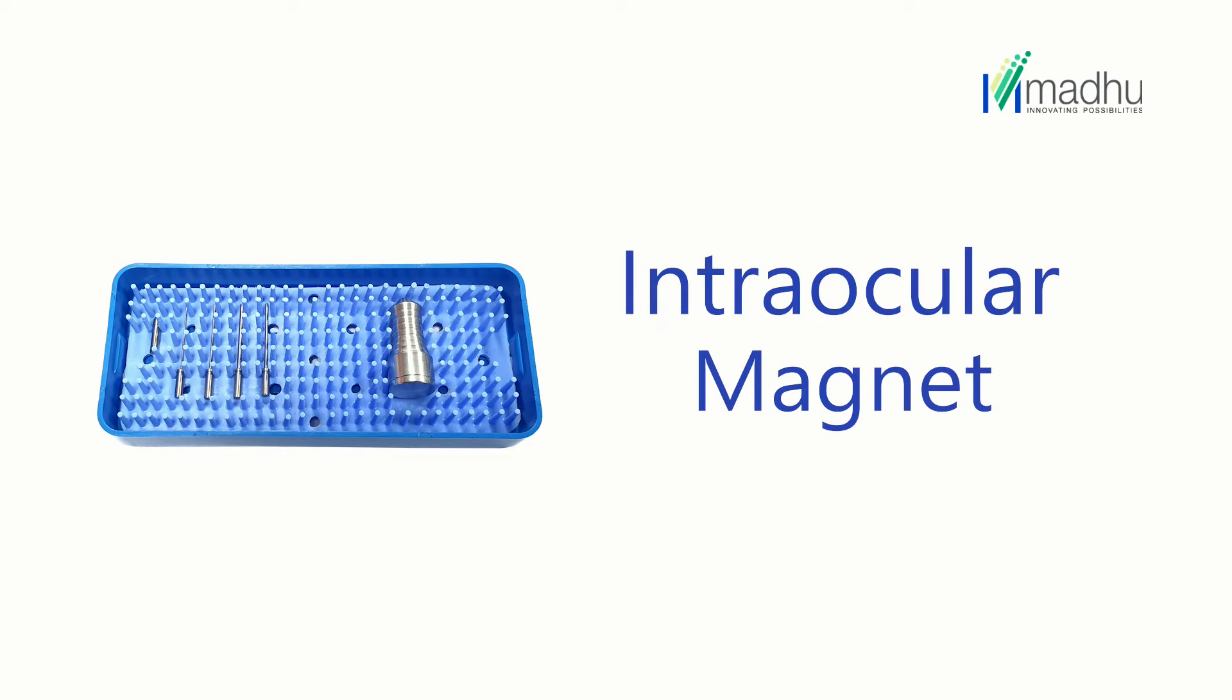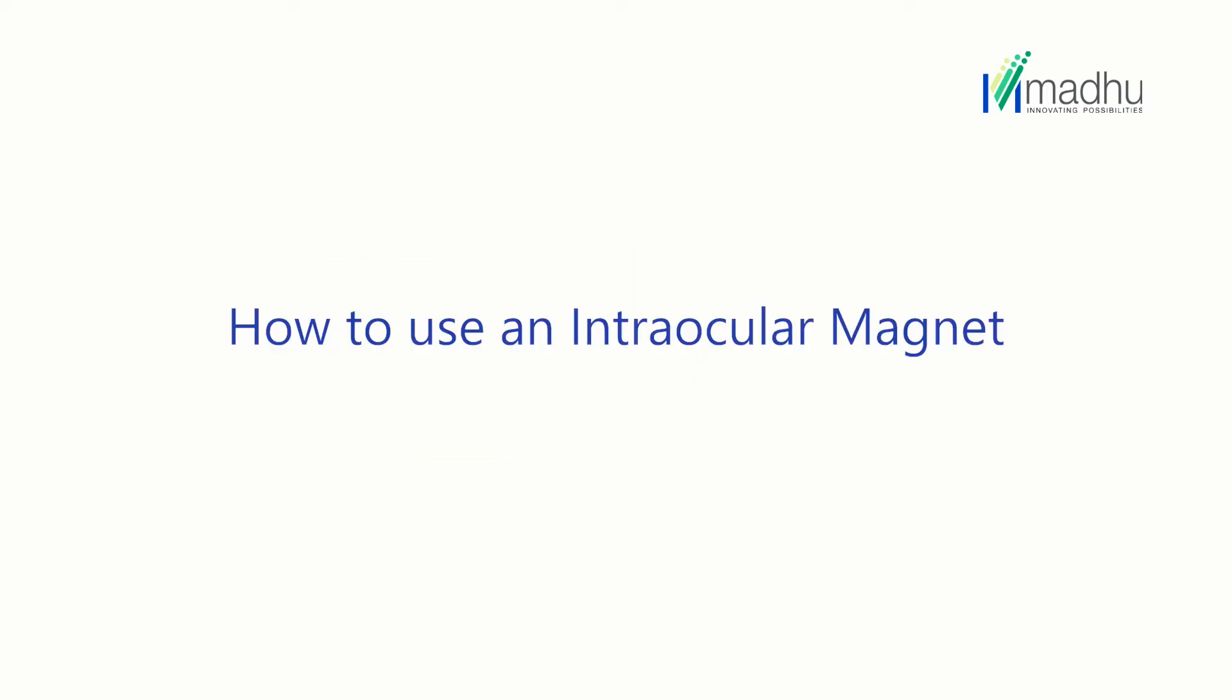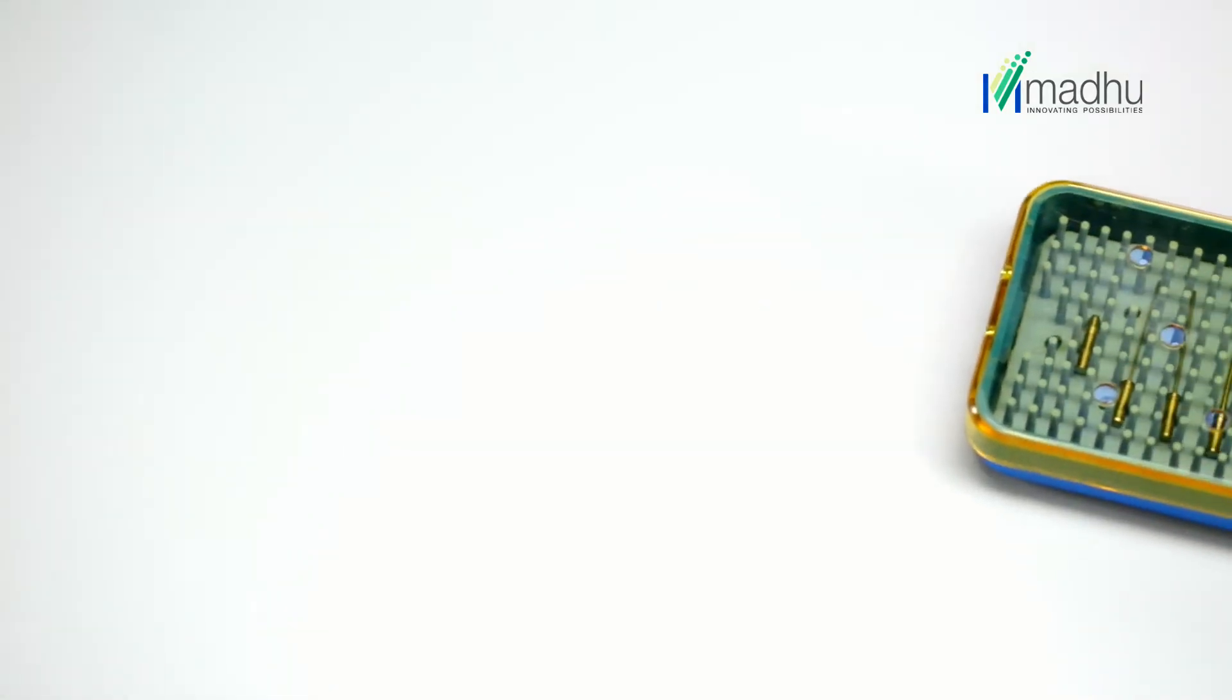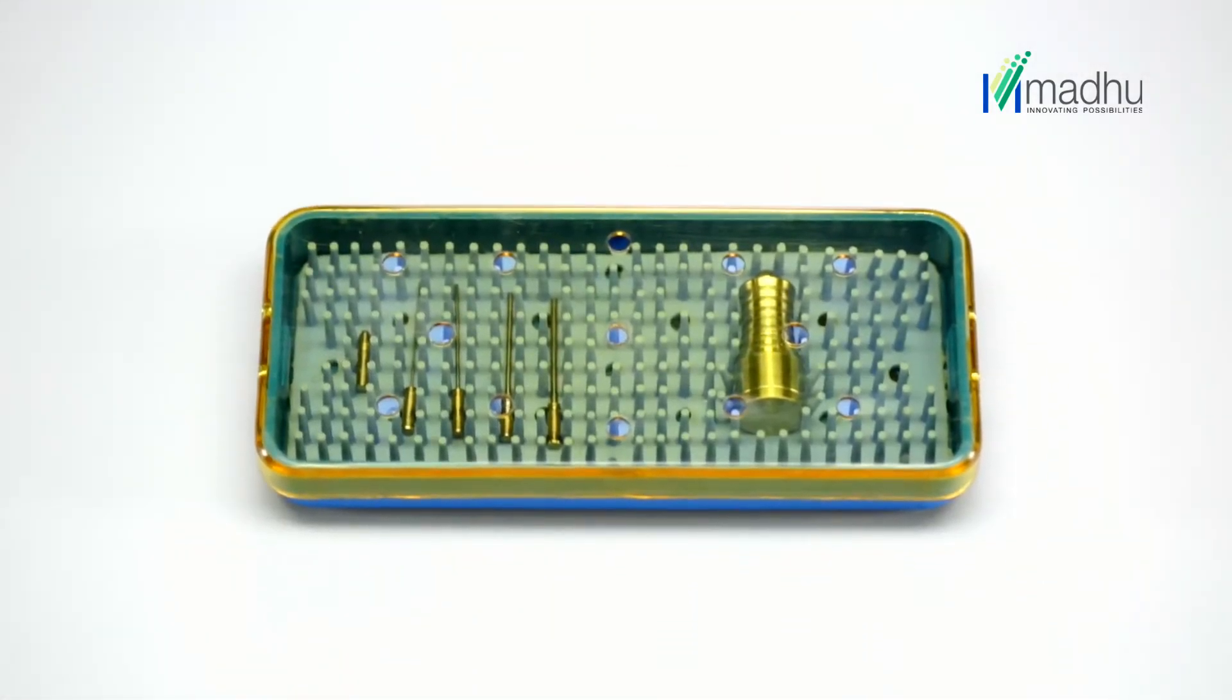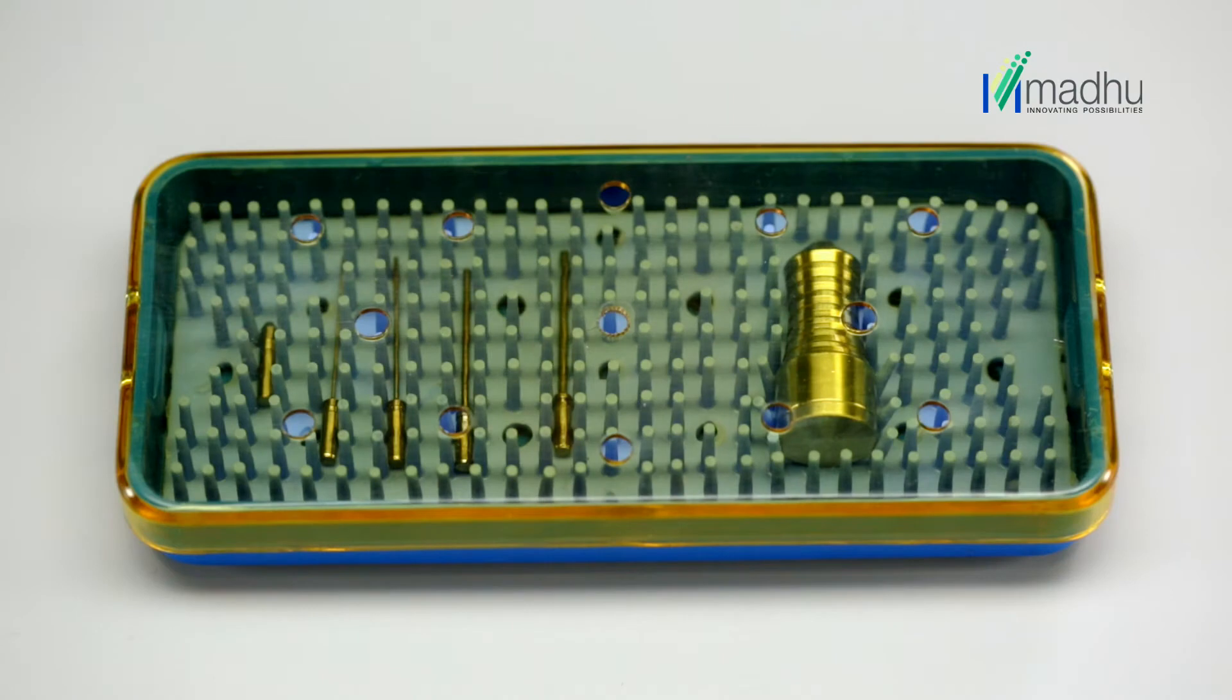An intraocular magnet is a device used for atraumatic removal of magnetic foreign bodies. It consists of a stainless steel handle with strong rare earth magnets and a set of five interchangeable tips of different gauges.